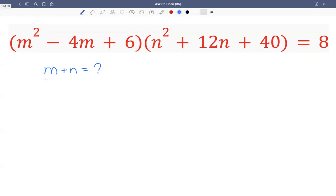So how do we do this? We have two variables. Maybe we can make perfect squares. Let's say from this one we have m squared minus 4m and we need plus 4 to make a perfect square. Then 6 minus 4, we should have 2.